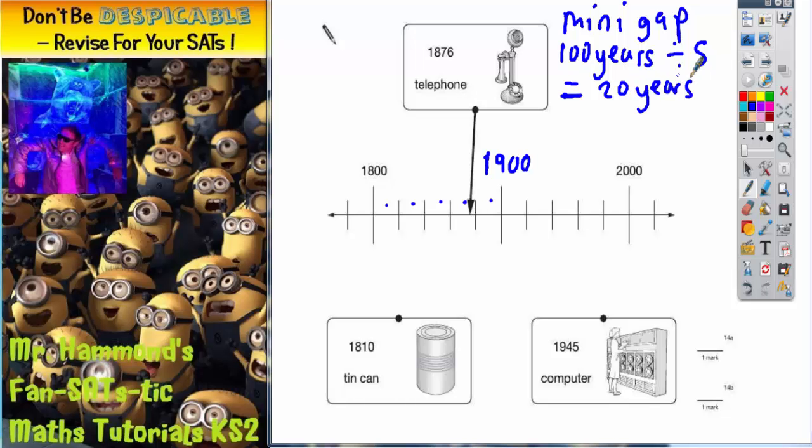Because 100 years divided by 5 is 20 years. So every time we go from one mini-gap to the next we're going up 20 years. And that will help us.